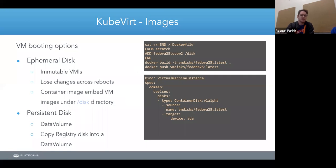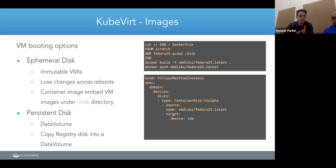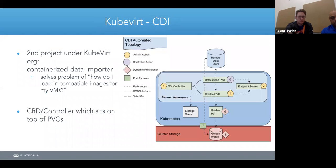There are two primary VM booting options - essentially whether or not you want changes to persist after your VM is gone. For ephemeral workloads that spin up to accomplish a task and spin down, you don't need persistence, so KubeVirt has ephemeral disk. KubeVirt makes it easy to keep a list of images in Docker registries. For persistent disks, it's a persistent volume claim with the image.